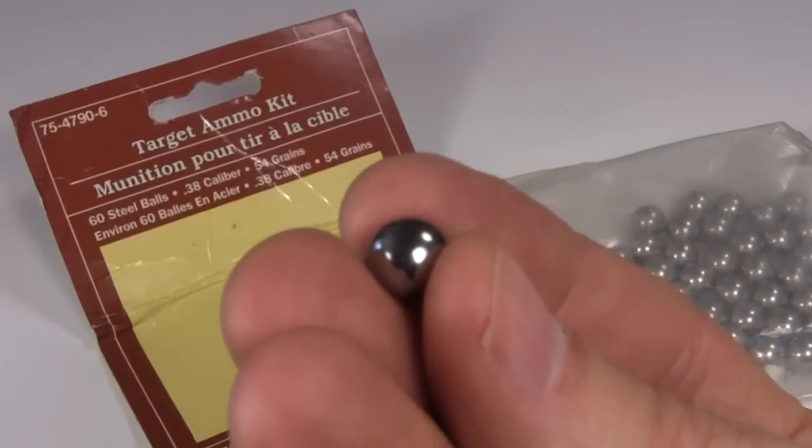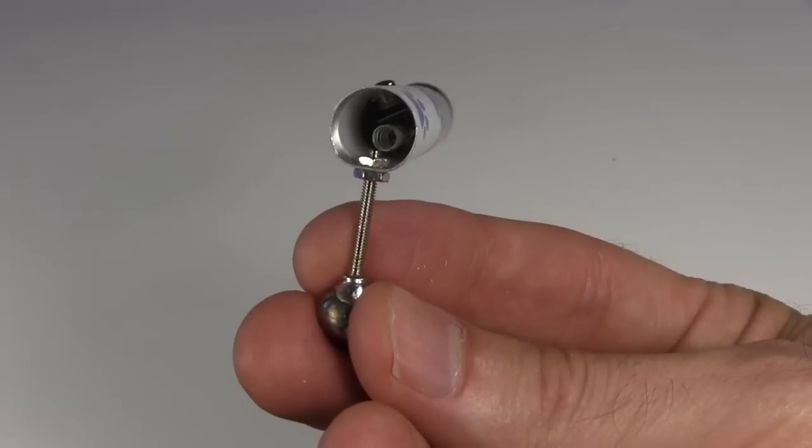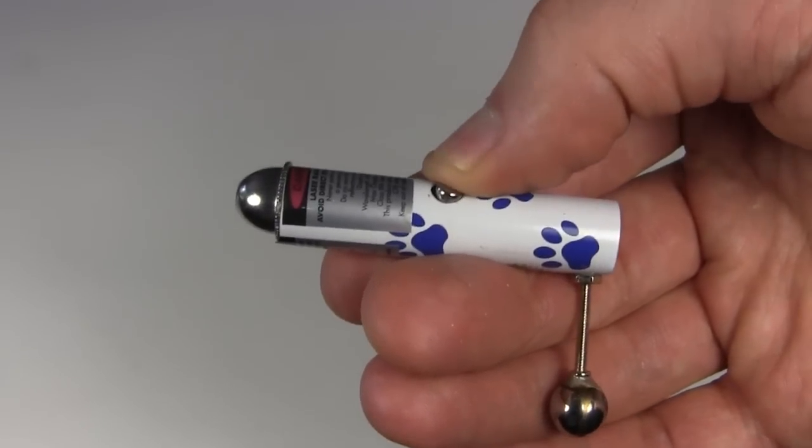Next I take a steel ball from a target ammo kit. To that I solder the head of a steel bolt. Then I put the end of the bolt through a hole in the laser and bolt it on. There's a switch on the laser that needs to be permanently pressed.